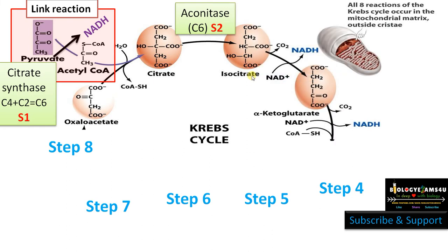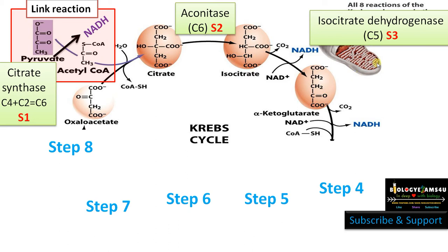In step 3, isocitric acid is converted to alpha-ketoglutarate and the enzyme involved is isocitrate dehydrogenase. This is the step where the number of carbons is reduced from C6 to C5. Isocitric acid has 6 carbons whereas alpha-ketoglutarate has 5 carbons, so there is decarboxylation releasing carbon dioxide and also dehydrogenation forming NADH. First, isocitrate is converted to oxalosuccinic acid by dehydrogenation, then oxalosuccinic acid is converted to alpha-ketoglutarate by decarboxylation.